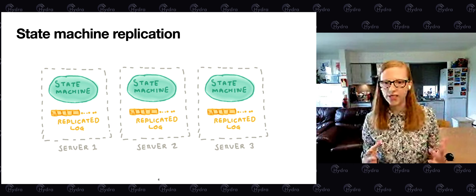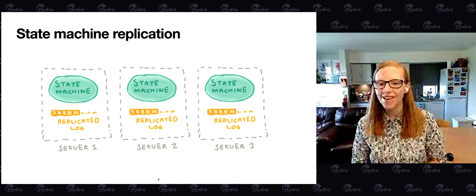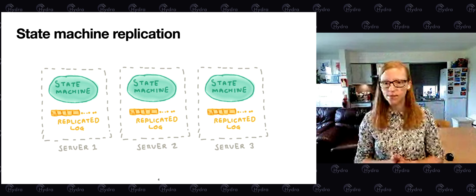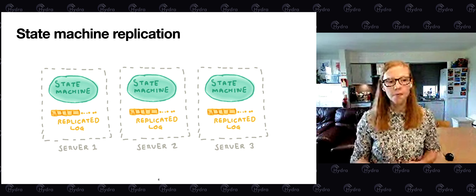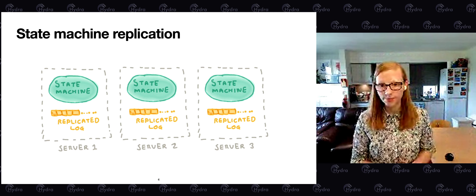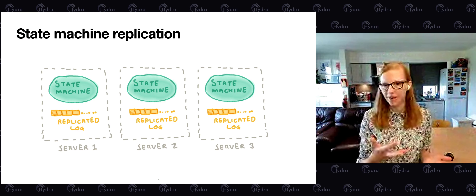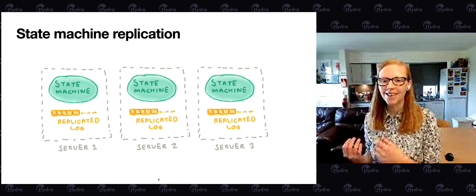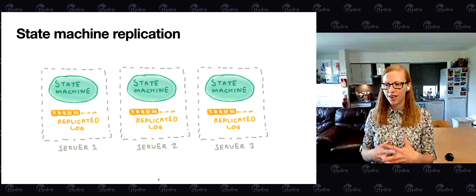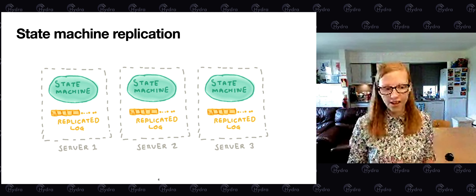State machine replication: you take an application you can express as a deterministic state machine and you replicate it. You've got, say, three state machines, and you need to ensure that every state machine sees the same sequence of operations in the same order. We use a replicated log to store operations, which then passes them to the state machine. But all we've done is swap one hard problem — how to implement linearizability — for another famously hard problem in computer science: how to solve consensus. We need a way of deciding an ordering of operations between these servers while tolerating failures and asynchrony.